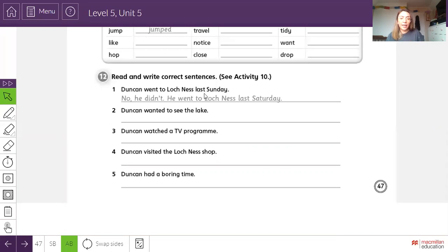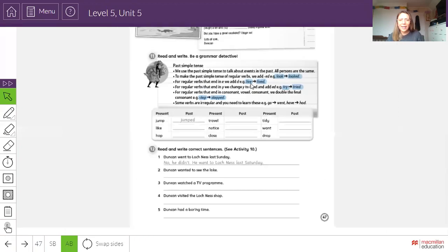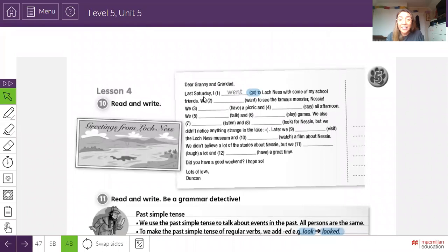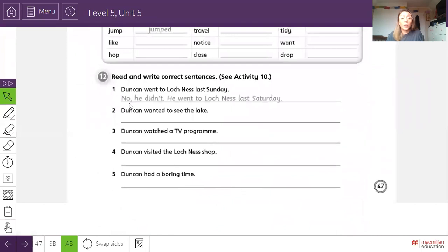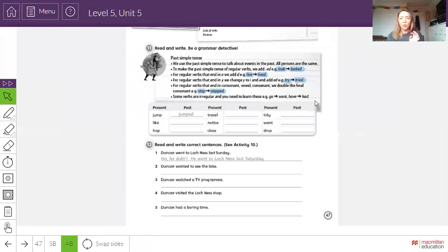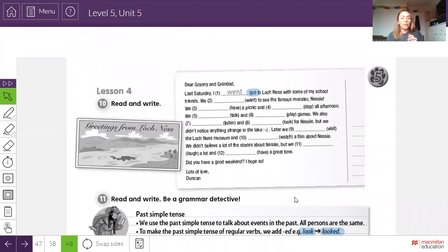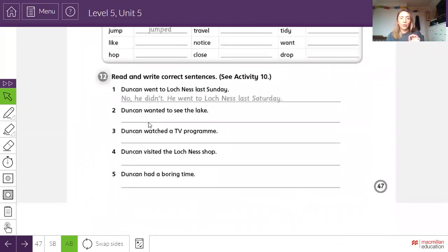For example, Duncan went to Loch Ness last Sunday. Let's see. Duncan went to Loch Ness last Sunday. And I go to the letter last Saturday. I went to Loch Ness. So, no, he didn't. He went to Loch Ness last Saturday. Not Sunday. Yes or no? What about number two? Duncan wanted to see the lake. Duncan wanted to see the lake. Quería ver el lago. Yes or no? So, let's see the text. And you say, no, he didn't. He.